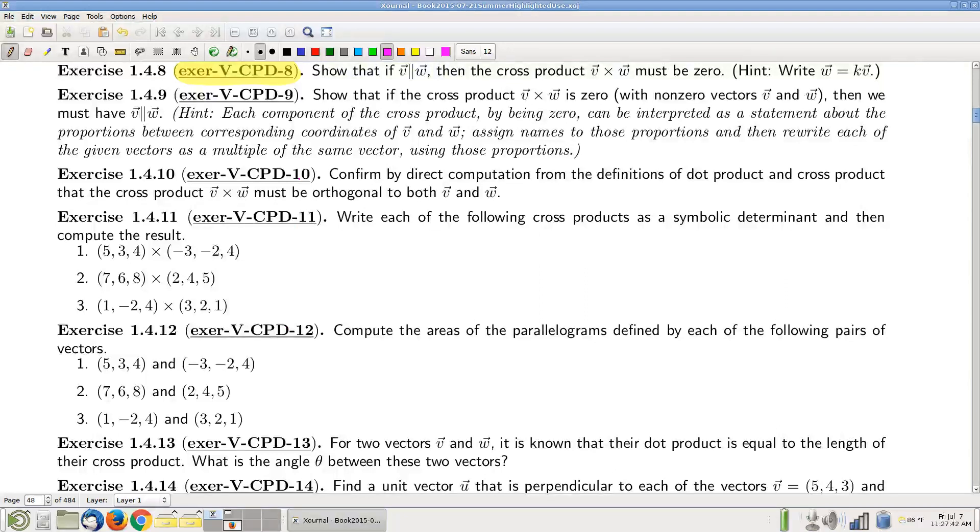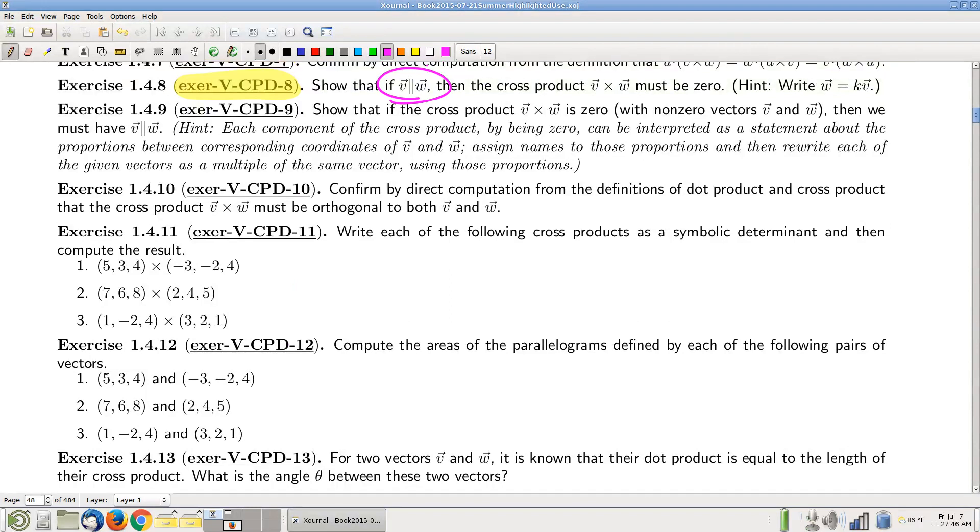Okay, so we are given that two vectors are parallel, then we need to show the cross product must be zero. The hint is great - it says that one vector is a multiple of the other. That's what it means to be parallel, algebraically anyway.